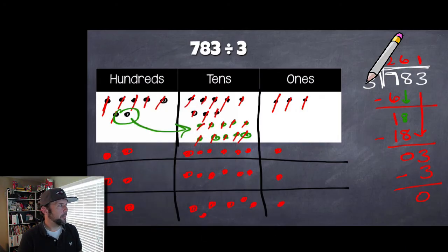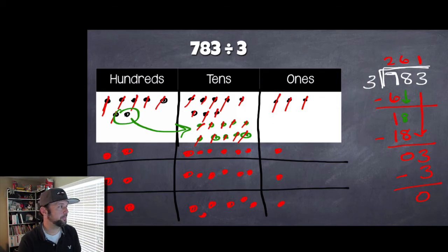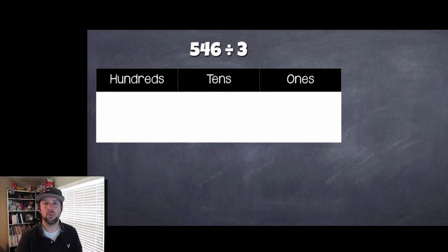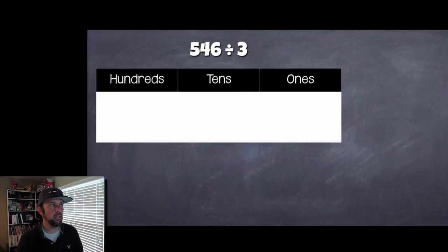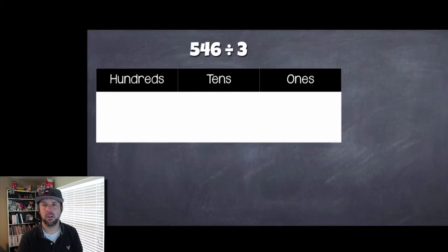Alright, here's our last example. We're dividing by 3 again, but we have 546 as our dividend. The divisor is 3 and we're looking for the quotient. Go ahead and take a stab at this one — model it out using the place value chart and try the standard algorithm as well. We'll come back and talk about it.